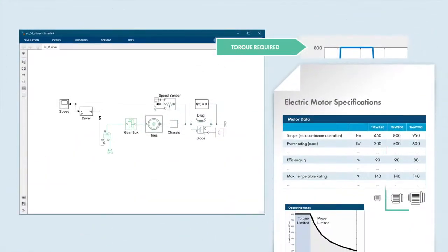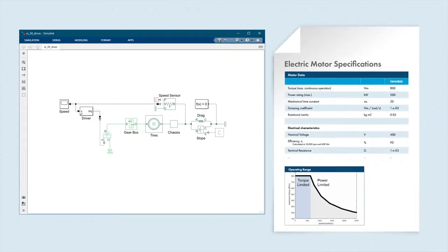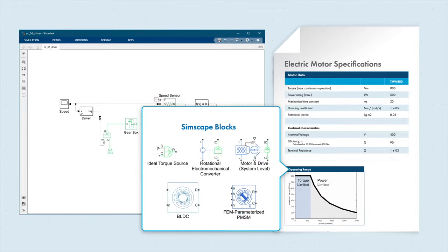With an estimate of the required torque, we can choose a motor and incorporate its behavior into the model. The motor we've selected provides a maximum torque of 800 Nm, and a maximum power output of 500 kW. Simscape has multiple blocks to represent an electric motor with varying levels of detail. With the motor and drive components, we can incorporate realistic torque speed behavior without modeling power electronics switching events, so it's perfect for our analysis.